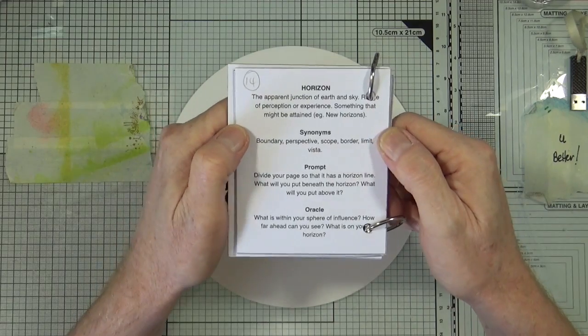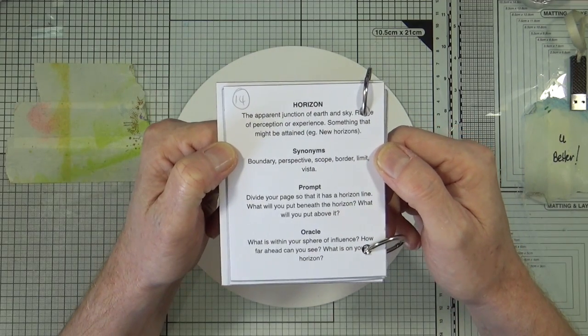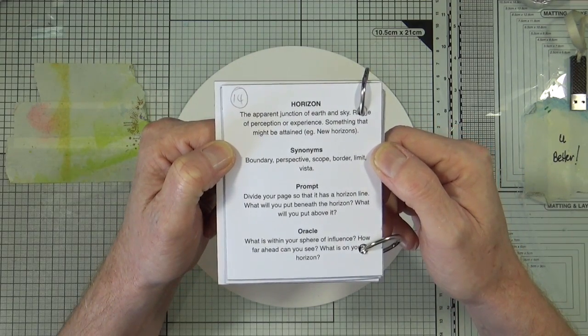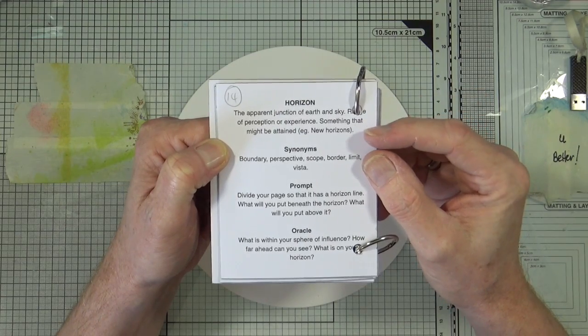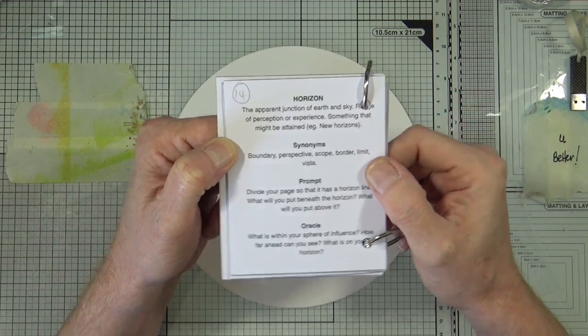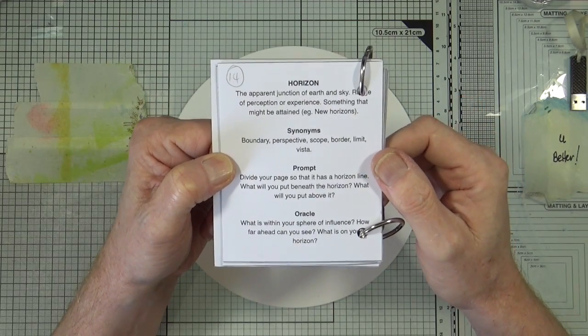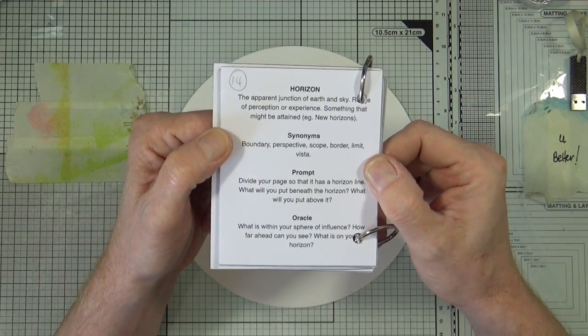The actual prompts read: the apparent junction of earth and sky, range of perception or experience, something that might be attained, for example new horizons. Synonyms: boundary, perspective, scope, border, limit, and vista.